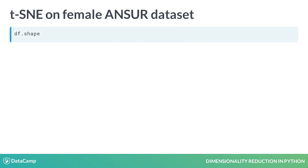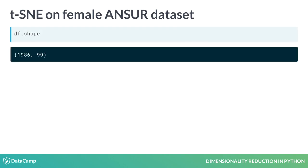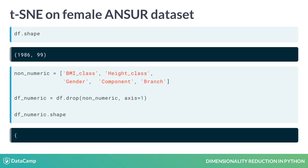Our female body measurements dataset has 99 dimensions. Before we apply TSNE, we're going to remove all non-numeric columns from the dataset by passing a list with unwanted column names to the Pandas DataFrame drop method. TSNE doesn't work with non-numeric data as such. We could use a trick like one-hot encoding to get around this, but we're using a different approach here.